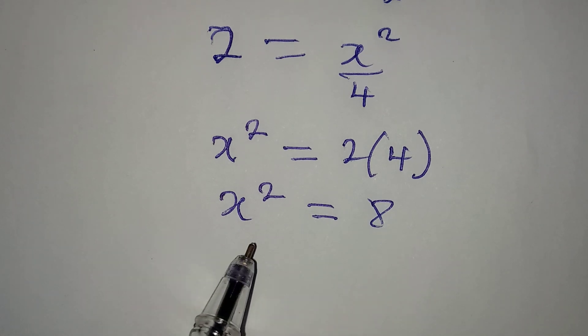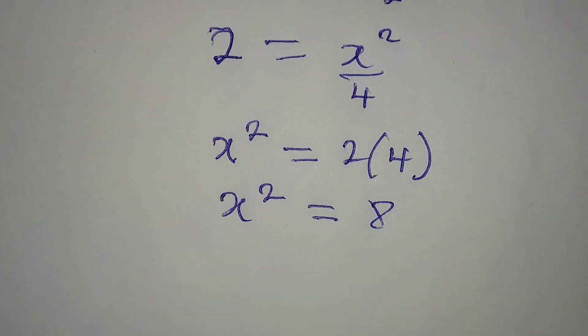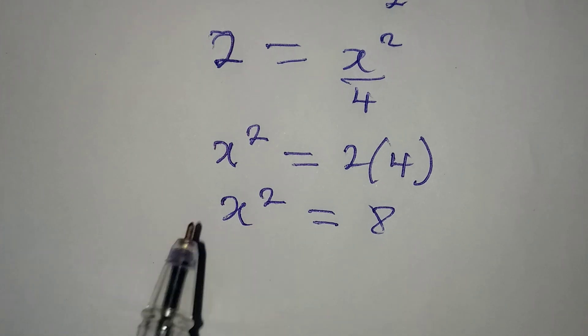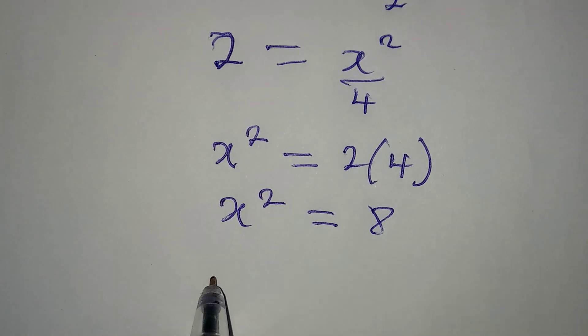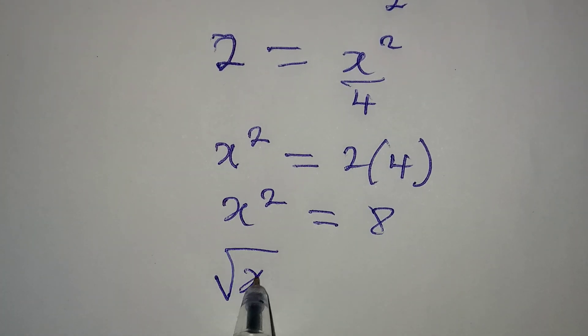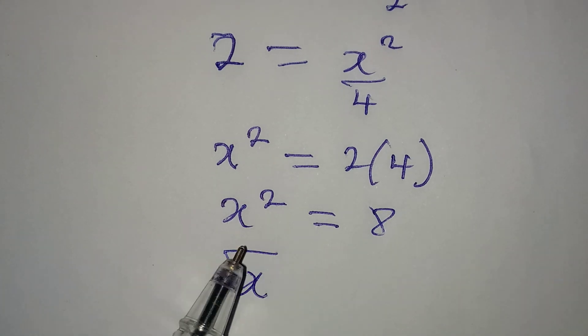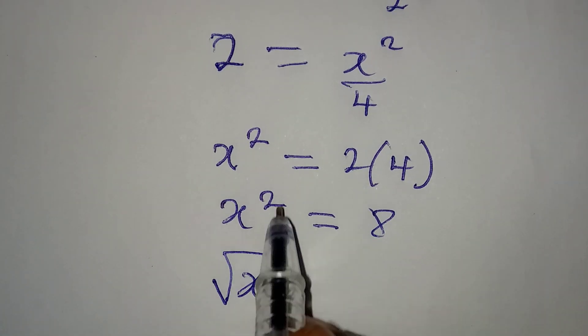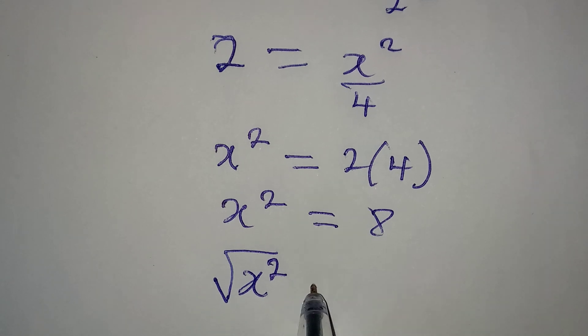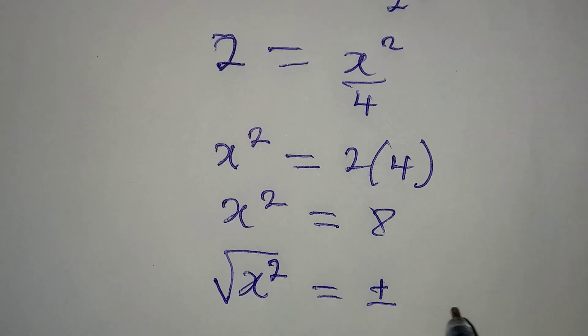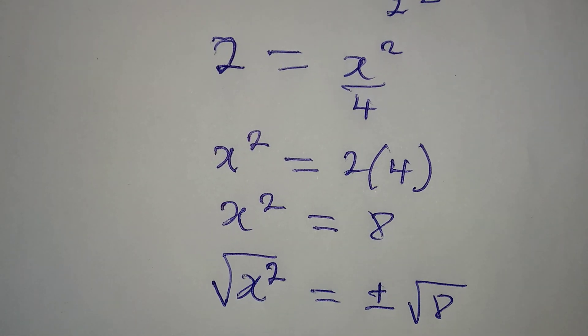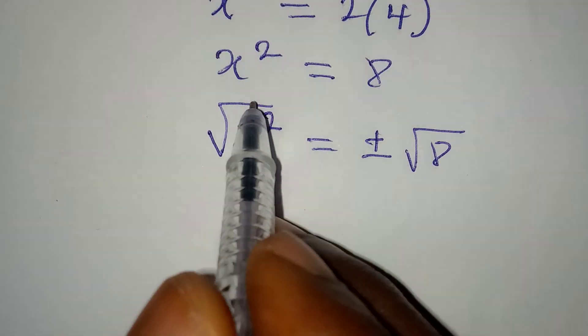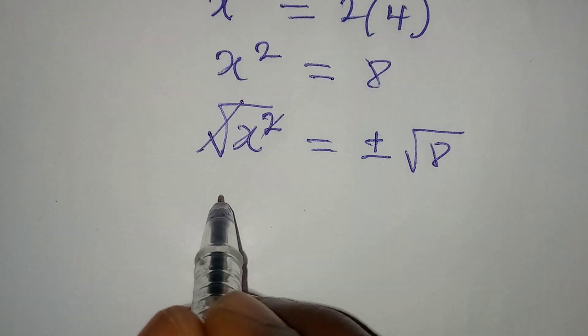To get the value of X, we need to square both sides. We need to take the square root of both sides. I'll take the square root of X squared and then plus or minus square root of 8. This will go with this and our X will be equal to plus or minus square root of 8.